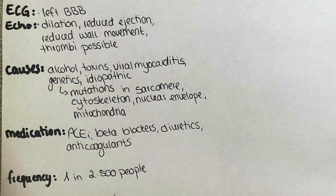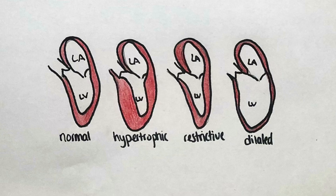Medications used to treat the condition are ACE inhibitors, beta-blockers, diuretics, and anticoagulants. The disease occurs in approximately one out of 2500 people. The dilation of the chambers can be seen in the drawing on the poster.